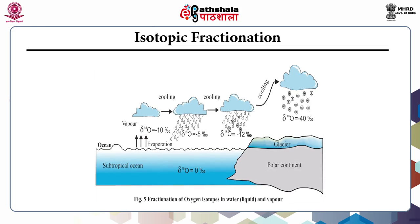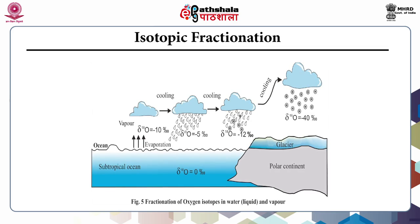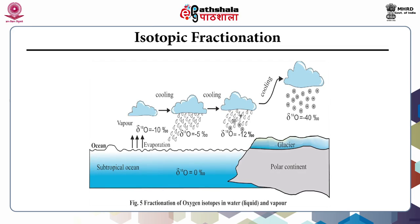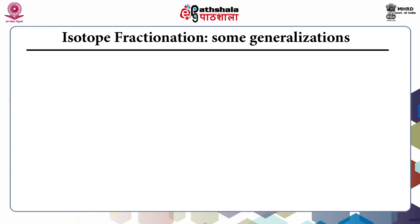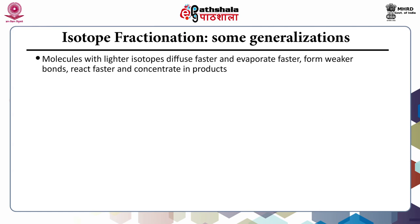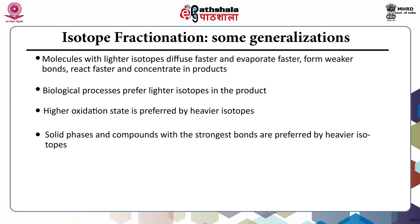This figure shows fractionation of oxygen isotopes in water and vapor phase. General facts about isotope fractionation: molecules with lighter isotopes diffuse faster and evaporate faster, form weaker bonds, react faster, and concentrate in products. Biological processes prefer lighter isotopes in the product. Higher oxidation states are preferred by heavier isotopes. Solid phases and compounds with the strongest bonds are preferred by heavier isotopes.